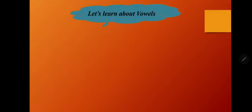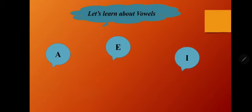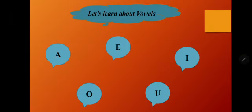Let's learn about vowels. Which letters are vowels? A, E, I, O, U — these are our five vowels. All the remaining letters apart from these are our consonants.